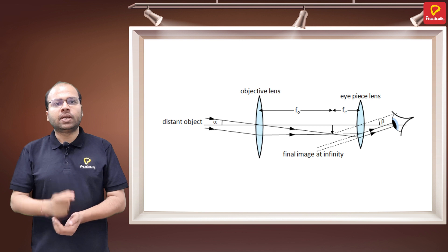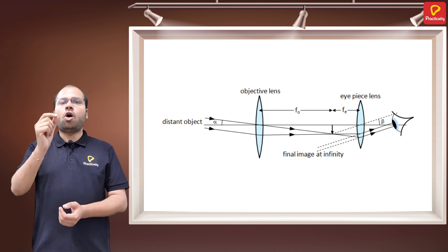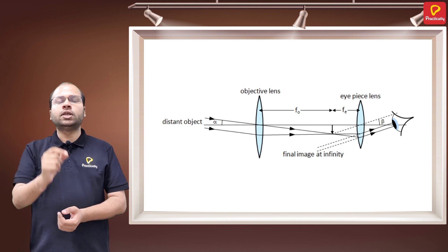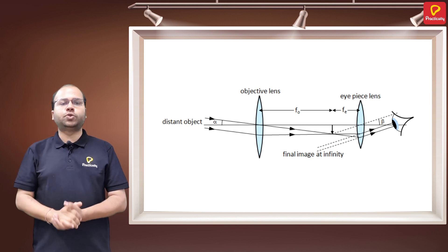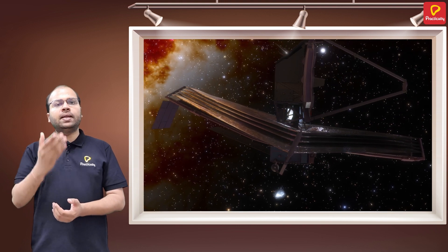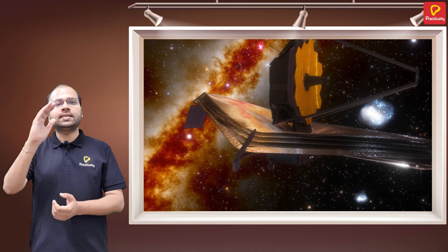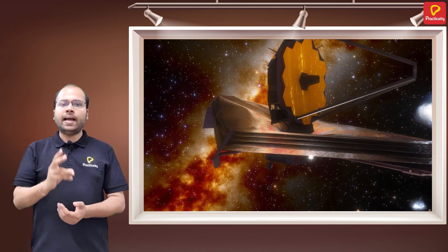It has an objective that can be a lens or a curved mirror facing the distant object, and an eyepiece which is close to the eye. So we have two types of telescopes: a refracting telescope and a reflecting telescope.